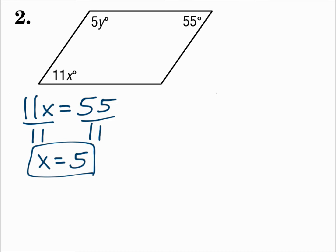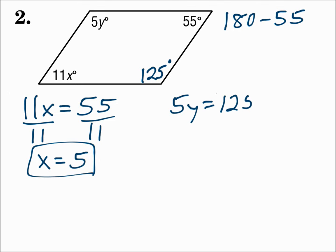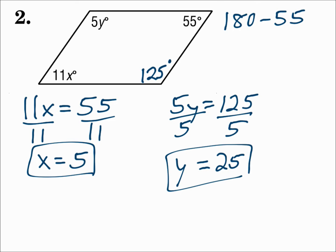For 5y, its opposite angle isn't listed, but we can find it because the missing angle and the 55 degrees have to be supplementary. 180 minus 55 is 125 degrees. So we need opposite angles congruent: 5y has to equal 125. Divide by 5, and y is 25. If both pairs of opposite angles are congruent, then it's a parallelogram.